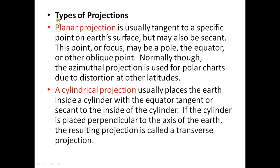The planar or azimuthal coordinate system is usually tangent to a specific point on the Earth's surface, but may also be secant. This point or focus may be a pole or equator. Normally, the azimuthal projection is used for polar charts to minimize distortion at other latitudes.